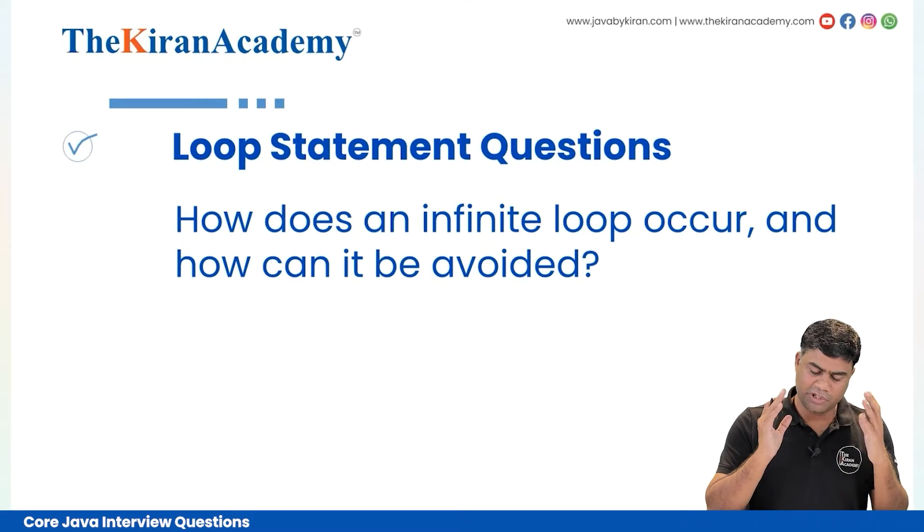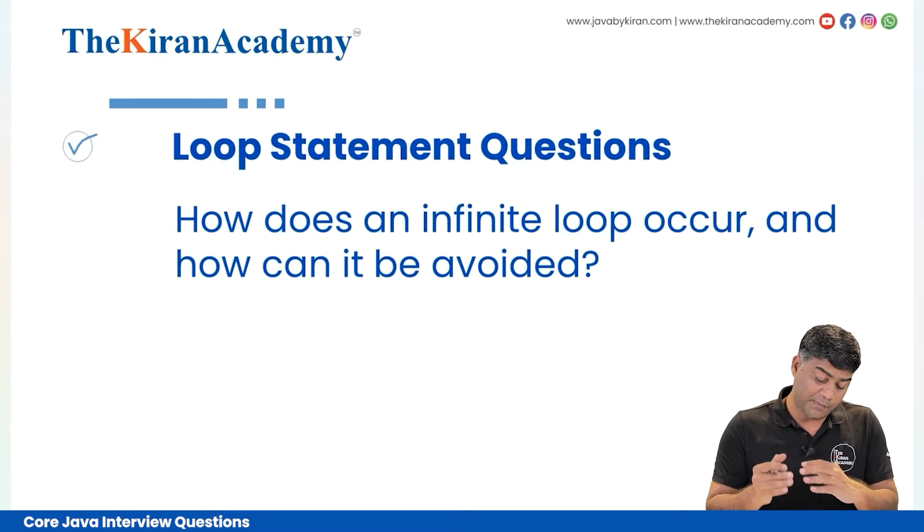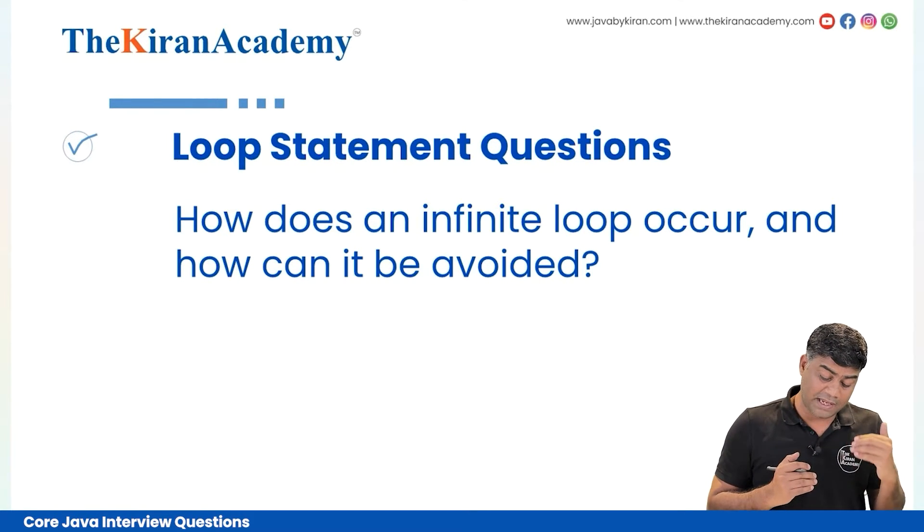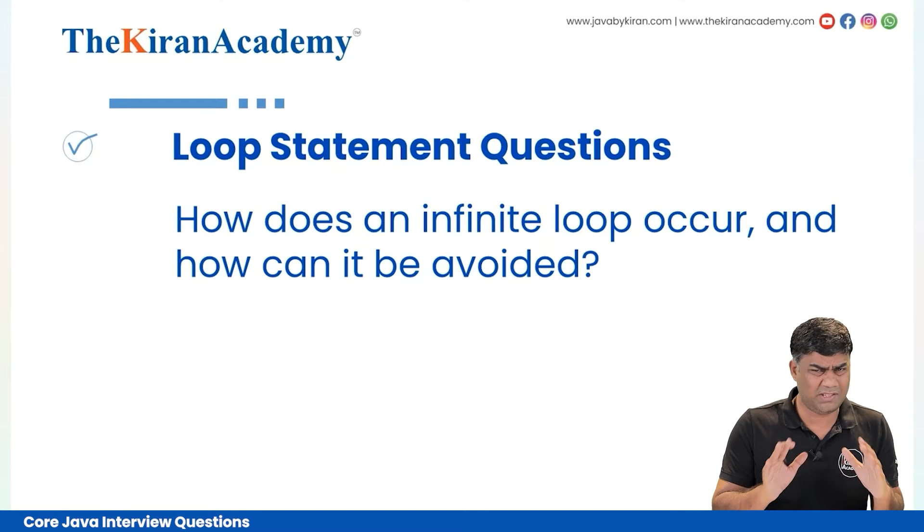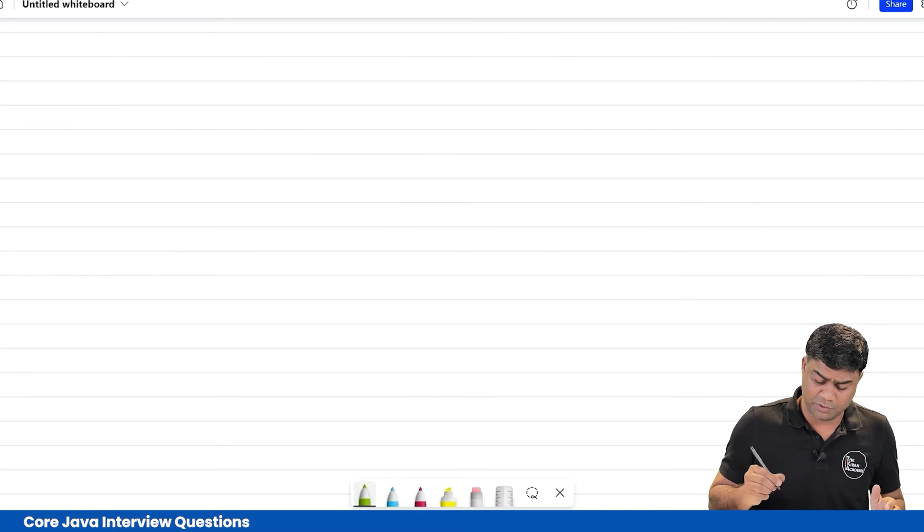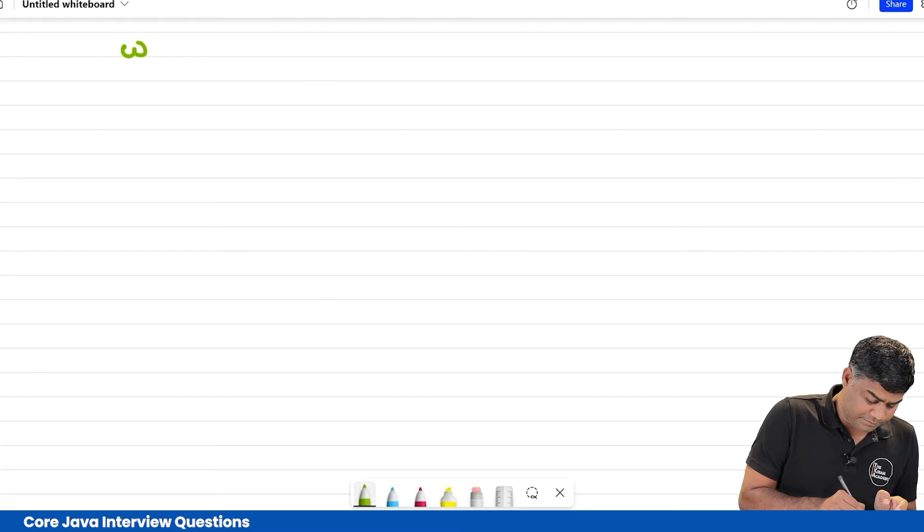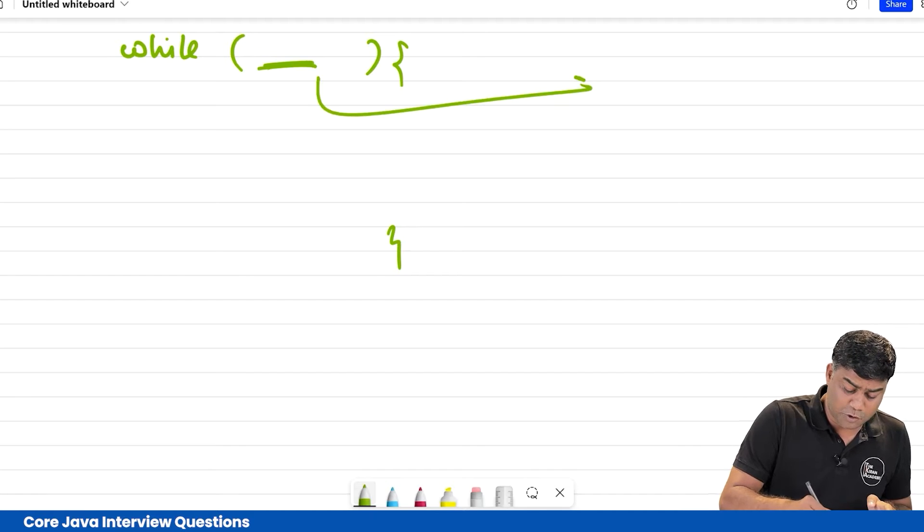Hello everyone, this is Kiran. Here we are into the next video of loop concept. So next question is: how does an infinite loop occur and how can it be avoided? Very simple question. Sometimes we do mistakes. Let's say while, and if you put some condition over here and now it remains true indefinitely, then this loop keeps executing.